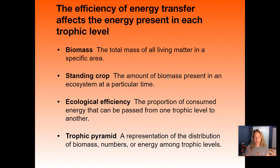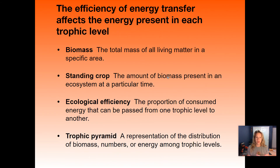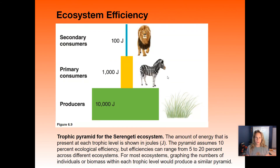Biomass is all living matter in an area — everything living within that area, even if not all of it is usable. Standing crop is what's present at a particular time; for example, in Redding in the springtime our standing crop is much greater than in summer when less growth is happening, so biomass changes throughout the year. Efficiency refers to how well energy transfers from one trophic level to the next, and it depends on whether the material is fibrous and hard to break down or something readily usable like grass or wheat.